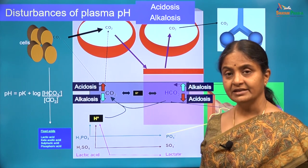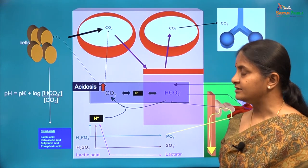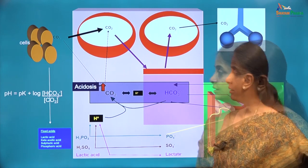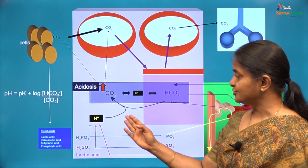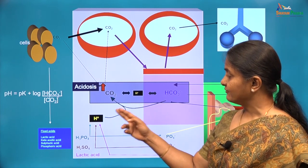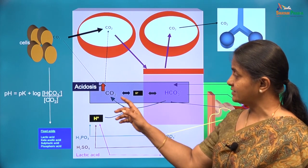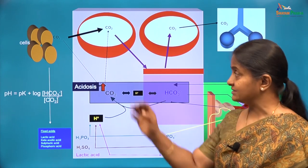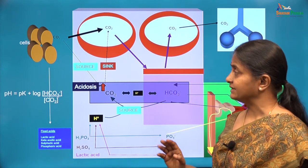Let us consider broad mechanisms which could lead to each of these disorders. For acidosis due to an increase in carbon dioxide in plasma: the sources of carbon dioxide coming into plasma are what comes from the tissues and carbon dioxide formed from fixed acids — fixed acid protons consuming the bicarbonate. The sink for carbon dioxide is uptake by red blood cells and removal via the lungs.